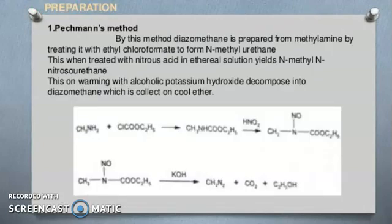Pitchman's method of preparation of diazomethane. By this method, diazomethane is prepared from methyl amine by treating with ethyl chloroformate to form N-methyl urethane. This when treated with nitrous acid in ethereal solution yields N-methyl N-nitrosoethane. This on warming with alcoholic potassium hydroxide decomposes into diazomethane which is collected in cool ether. You can see the reactions.